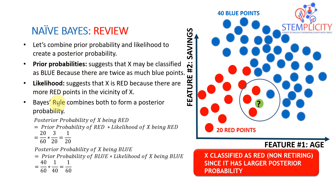The next calculation is what we call the likelihood, which is where we draw a circle and suggest that X is red because there are more red points in the vicinity of X compared to blue. Here we have 3 divided by 20, and on the other side we have 1 divided by 40 — and those are the likelihoods for red and blue respectively.